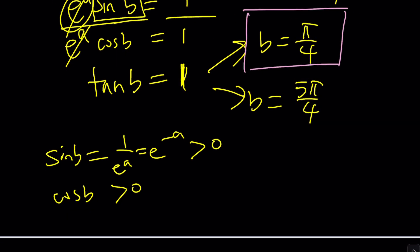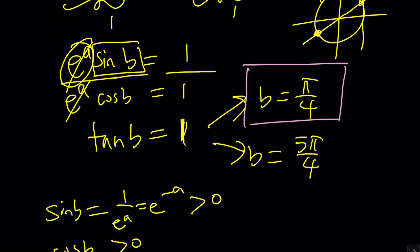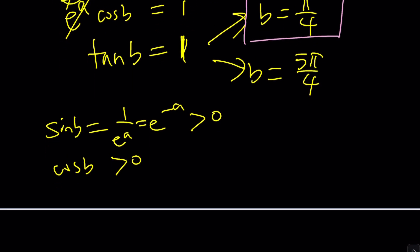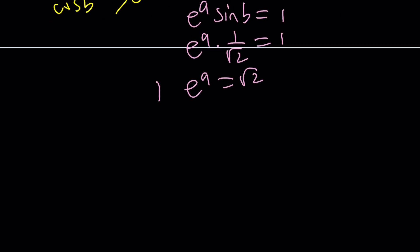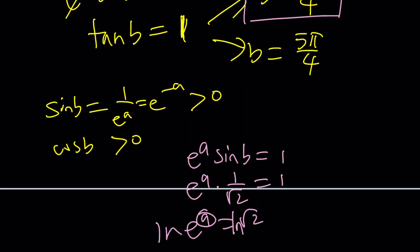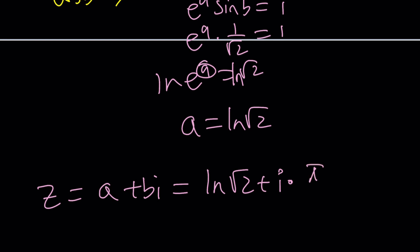If you plug it in, z, what is a? Well, e^a sin b is 1. If b is π/4, sin b is 1/√2. So e^a is √2. If you ln both sides, you get a = ln(√2). So since z = a + bi, a is ln(√2) and b is, I forgot what it is. π/4. It's just an angle. So that's the natural log of a complex number. And this brings us to the end of this video.